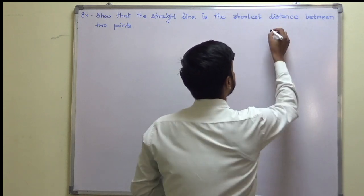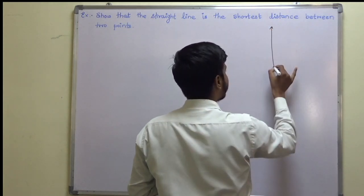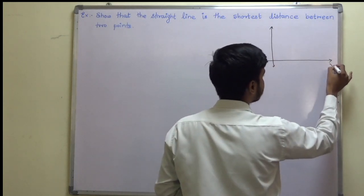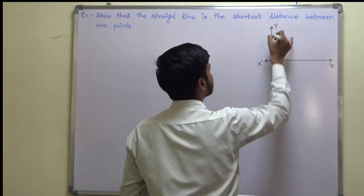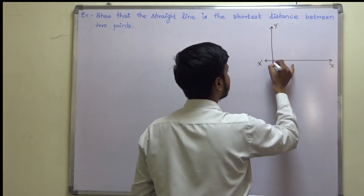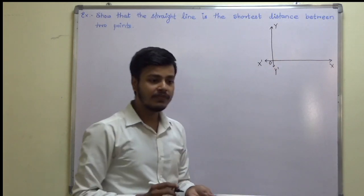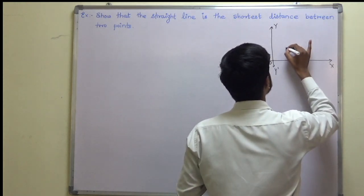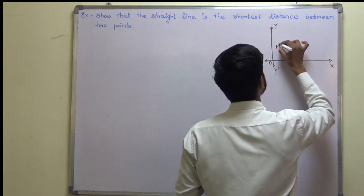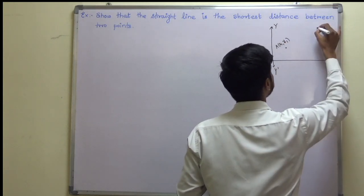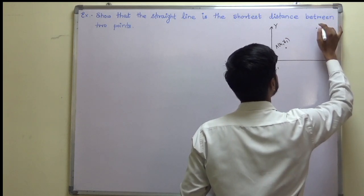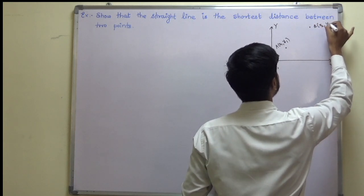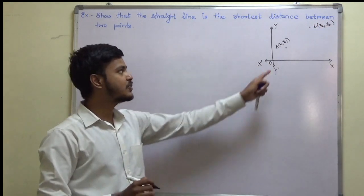We are just going to take two points, and as it is a straight line we will be taking the xy plane. So now I have taken the xy plane and I need to take two points. Let me take this to be point A at (x1, y1) and let me take this point to be B at (x2, y2). Now I have taken two points in a plane.